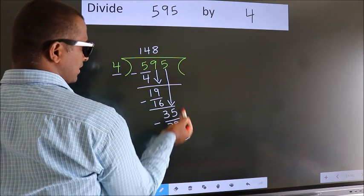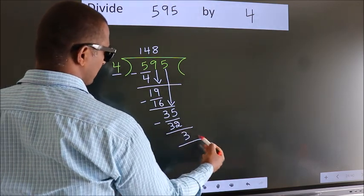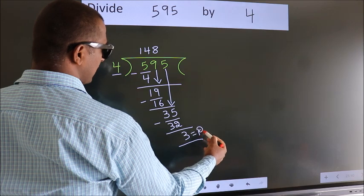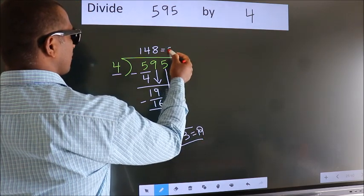No more numbers to bring it down. So we stop here. This is our remainder. This is our quotient.